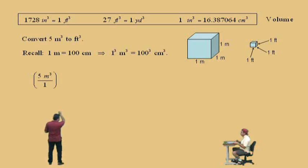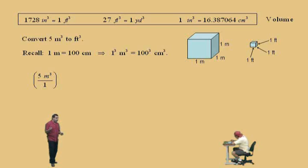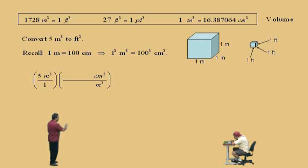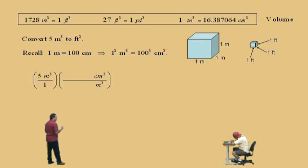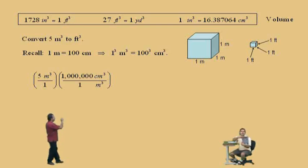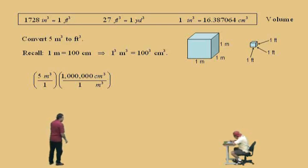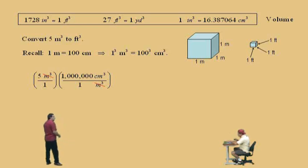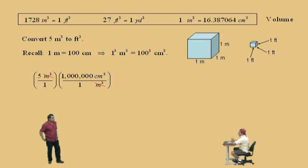We first write our ratio of 5 meters cubed over 1, and now we're going to convert the meters cubed to centimeters cubed using that equation. We put the meters cubed on the bottom and centimeters cubed on top. What's 100 cubed? That's right — it's 1 million. So 1 million centimeters cubed is equal to 1 meter cubed, because 1 cubed is 1. Meters cubed cancel out, leaving us with centimeters cubed. Now we're going to convert the centimeter cubes to inches cubed.